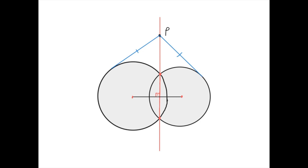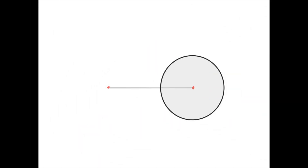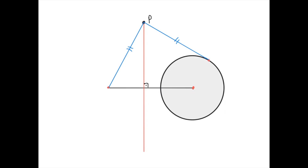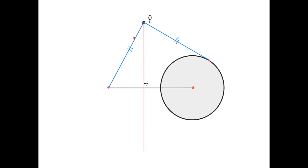If a point P has the same power with respect to two circles and lies outside both, then the tangent lengths from P to each circle are equal. It's also possible for one of the circles to have zero radius — we can think of a point as a circle with zero radius centered at that point. There would still be a radical axis, perpendicular to the line from the circle's center to the point, and for all points on this radical axis the tangent length to the circle equals the distance to the degenerate point.